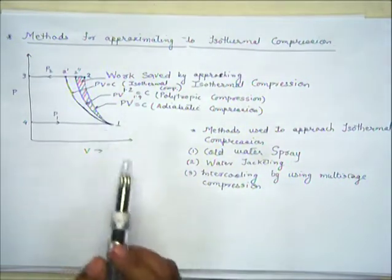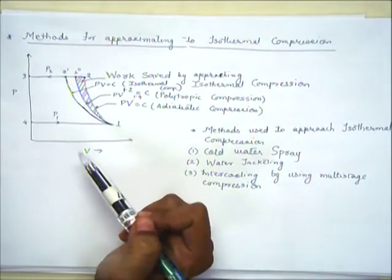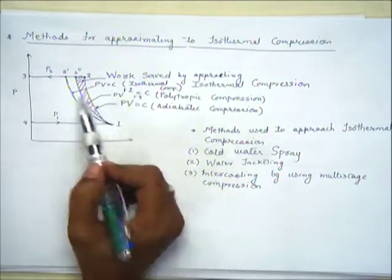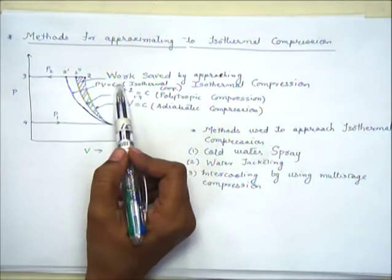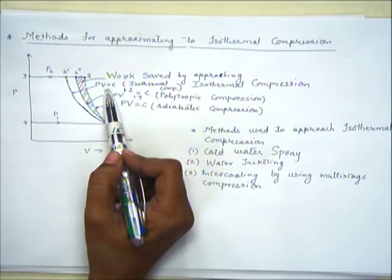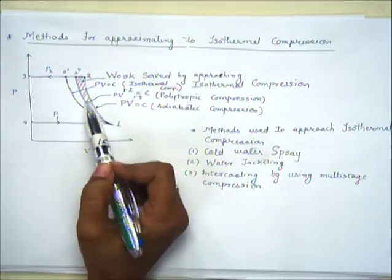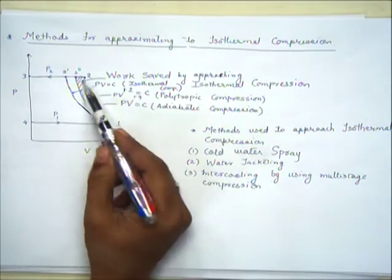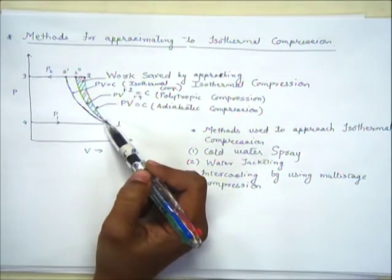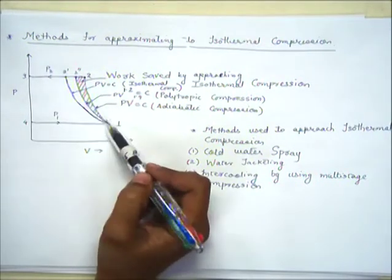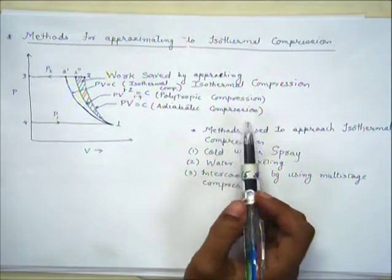On the PV diagram, the line 1-2 shows adiabatic compression where PV^1.4 = constant. The innermost line represents isothermal compression. Ideally it should be isothermal, but we cannot achieve exactly isothermal compression, so what we get is polytropic compression. We can see there is a reduction in work required — shown by the area between the curves. Even if we cannot achieve complete isothermal compression, we can try to approach it by various methods.